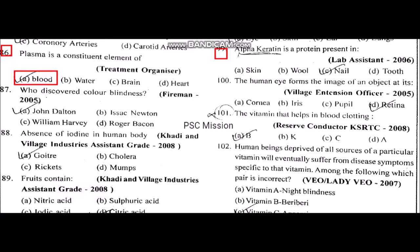Trachoma is a disease of the eye. Who discovered color blindness? John Dalton. Absence of iodine in the human body.